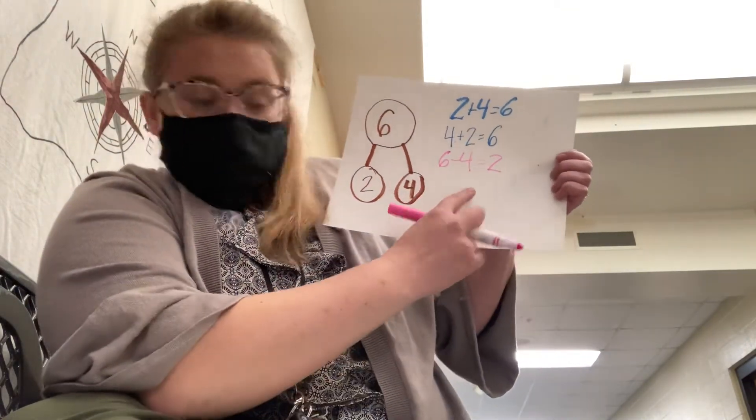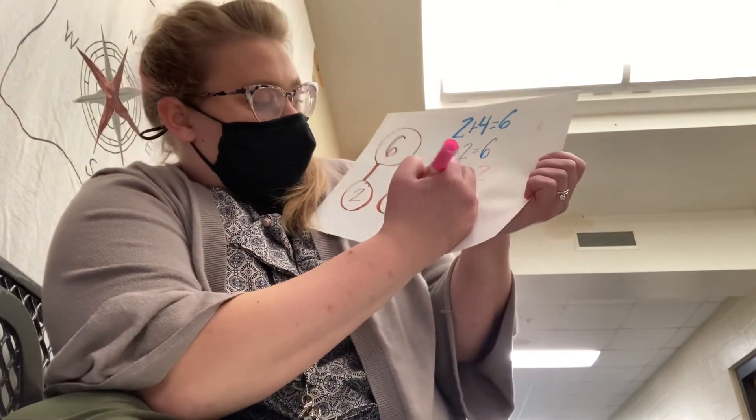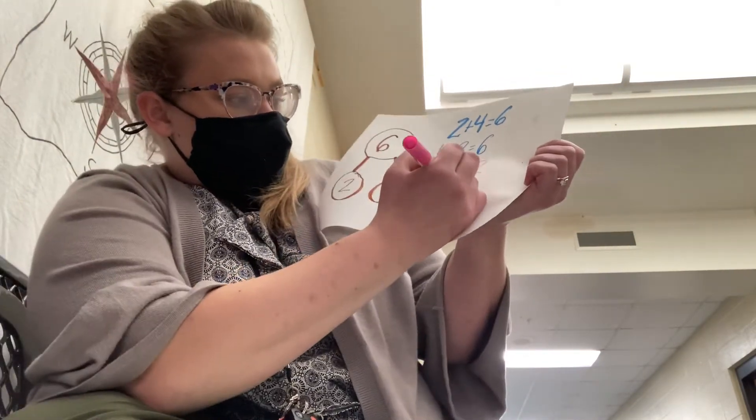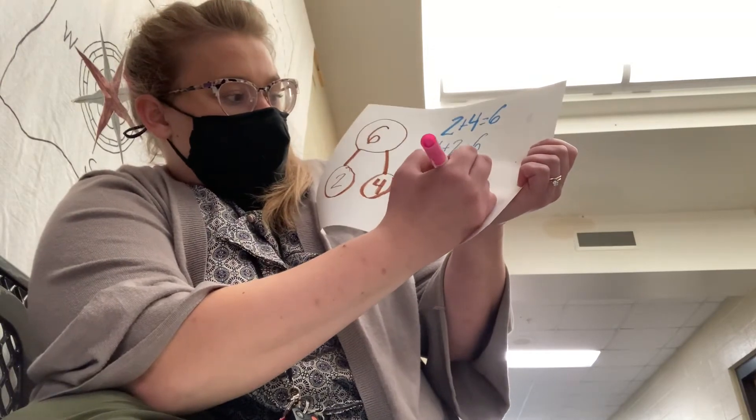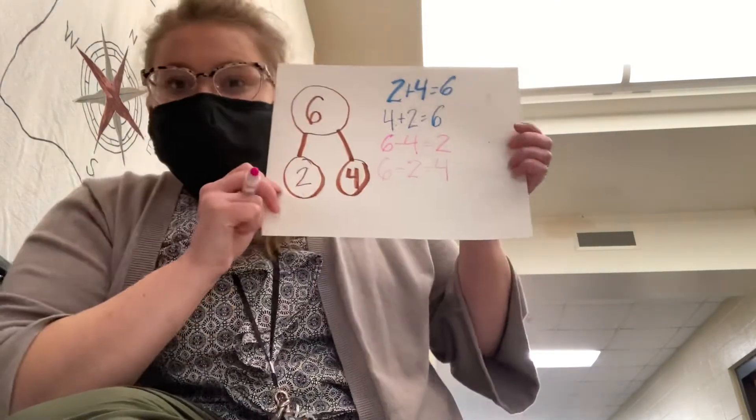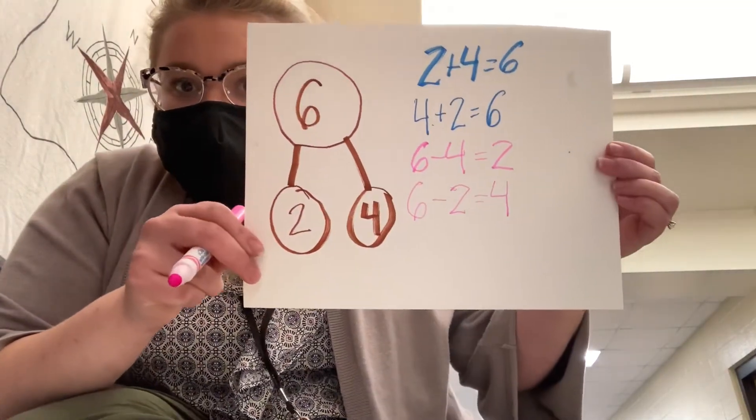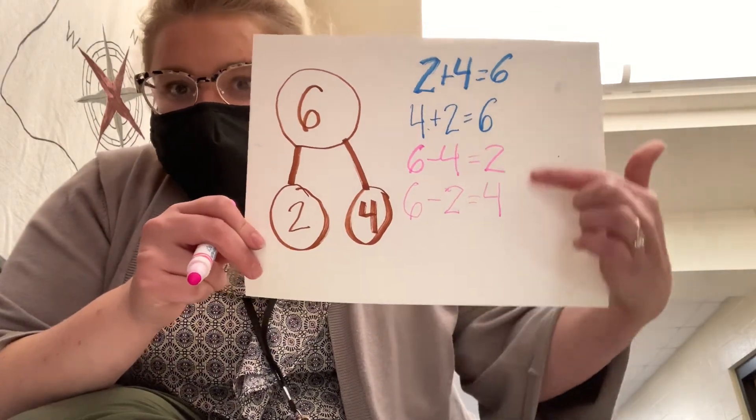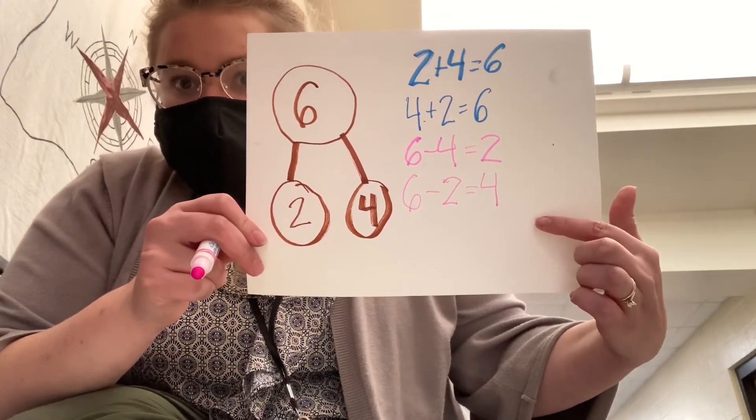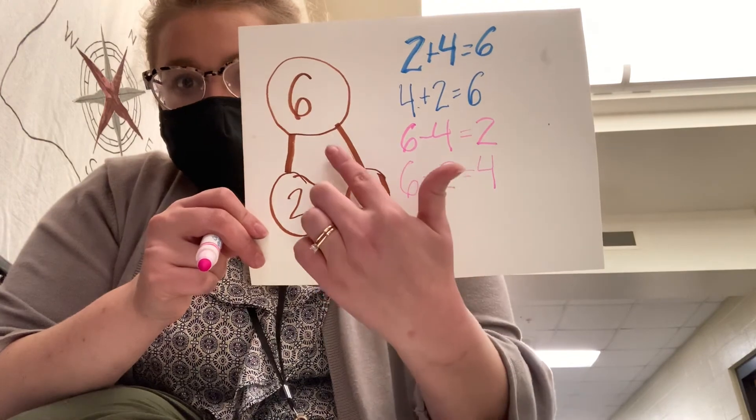Or we could start with our pile of six, our whole. We can take away two and there would be four pieces left over. Six minus two equals four. This is our fact family and it shows the different ways that the parts come together to make the whole.